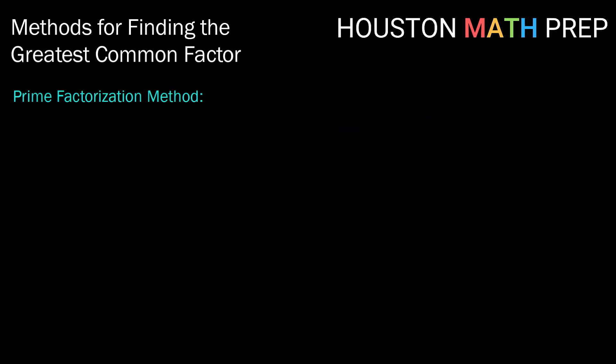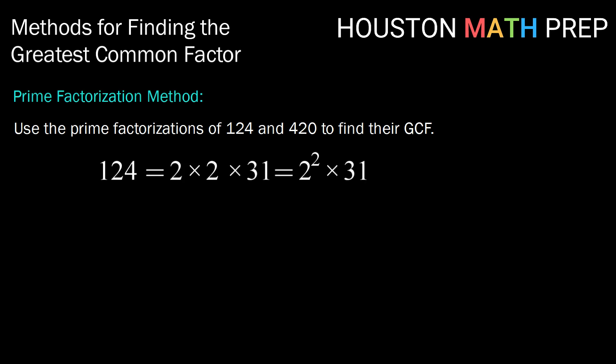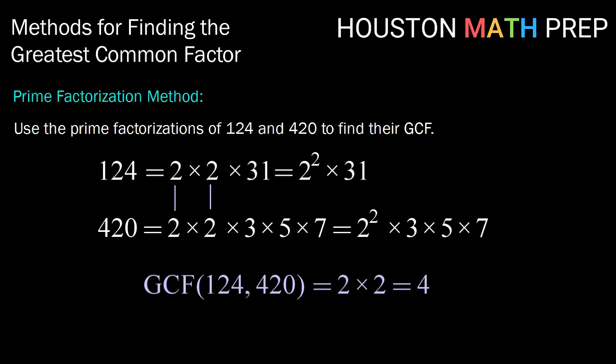For that, often we might use the prime factorization method. This one, we find the prime factorization of two numbers. Let's say 124 and 420. So the prime factorization of 124 is 2 squared times 31, and 420 is 2 squared times 3 times 5 times 7. We then take all the common factors that are shared, and multiply them.